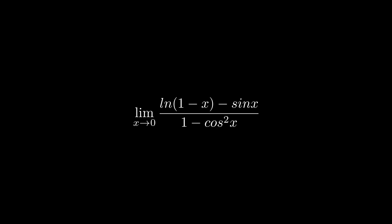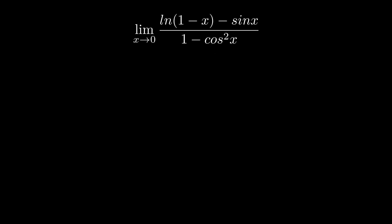The limit that the judge asks her to solve is the limit as x approaches 0 of the natural logarithm of 1 minus x minus sine x divided by 1 minus cosine squared x. If we evaluate this expression, we get 0 over 0, an indeterminate form.